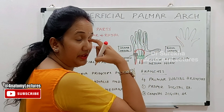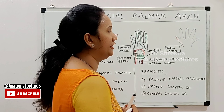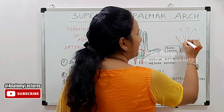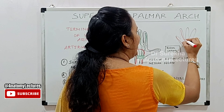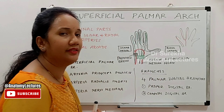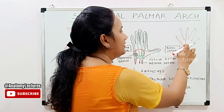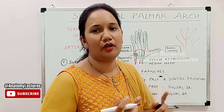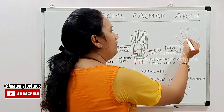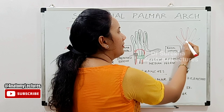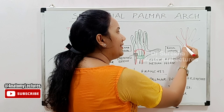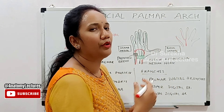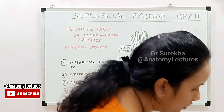To locate the superficial palmar arch, look at its convexity. If you put your outstretched thumb out, the convexity will coincide with the distal border of your outstretched thumb. So the superficial palmar arch corresponds with the distal border of the outstretched thumb — that is how you locate it.